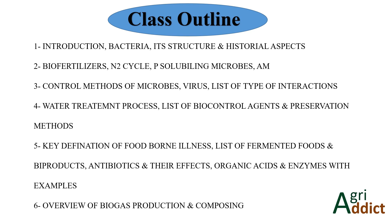The fourth class covers water treatment processes, biocontrol agents, and different preservation methods. The fifth class covers key definitions of foodborne illness, fermented products and their byproducts, antibiotics and their effects, and organic acids and enzymes with examples. The sixth class covers biogas production and composting to conclude the microbiology series. If interested, visit the link in the description box. You can also download our app to find free mock tests for the ICAR-JRF Plant Science exam, along with free downloadable study materials for your preparation.